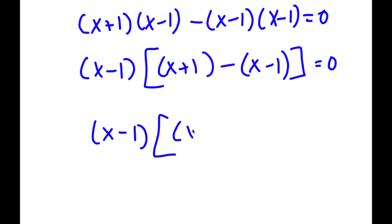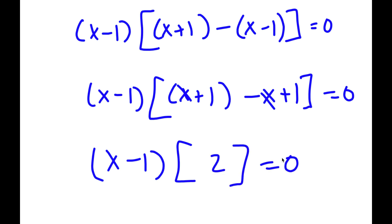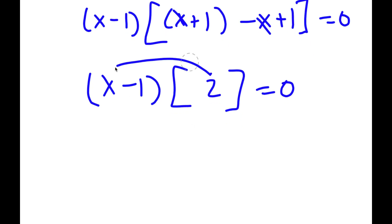Now, x plus 1 minus x minus 1 — the two x's cancel out — leaving 1 plus 1, which is 2. So I have x minus 1 times 2 equals 0. Distributing the 2: 2 times x is 2x and 2 times negative 1 is negative 2, so I have 2x minus 2 equals 0.